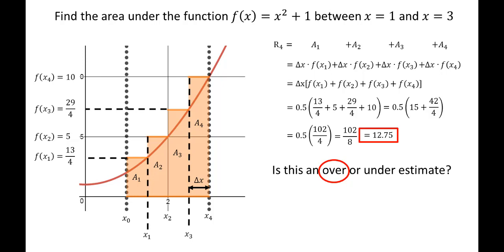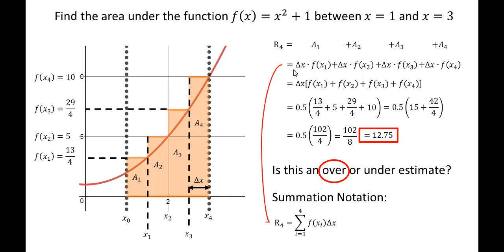It's helpful to make a more general description of this area by converting it into a summation. We can define R sub 4 in summation notation, which is a cleaner way to express it. We're summing from i equals 1 to 4: the sum of f of x sub i multiplied by delta x. So we sum up f(x1) plus f(x2) plus f(x3) plus f(x4), all multiplied by delta x.